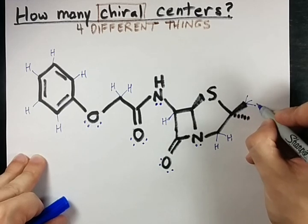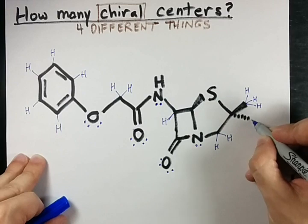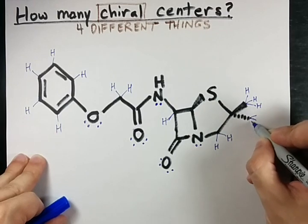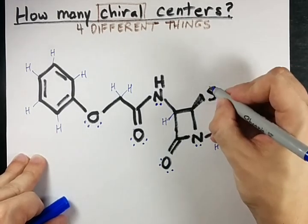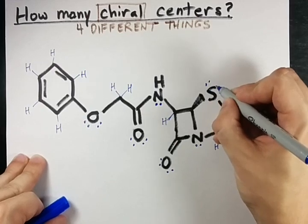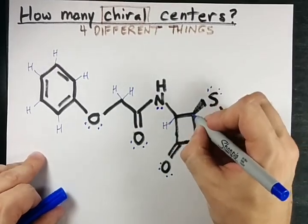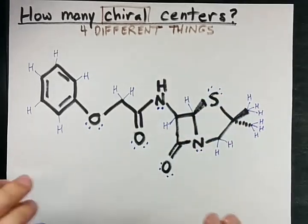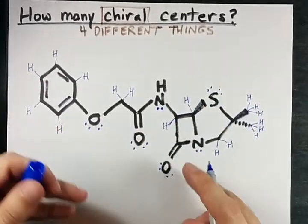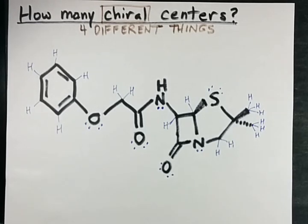Three hydrogens to each of these — that's a CH3 group here. This sulfur needs two lone pairs, and this hydrogen needs to be shown as well. Okay, so all the atoms have their four things around. They satisfy the octet rule. Let's start counting and see if we can find atoms that have four different things attached.